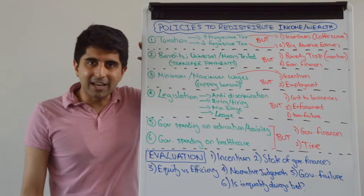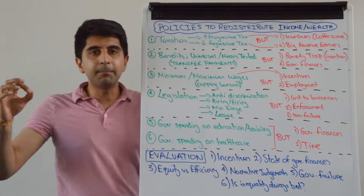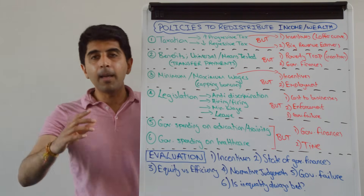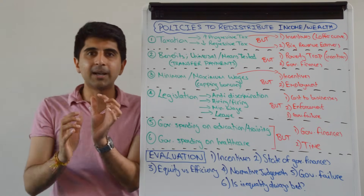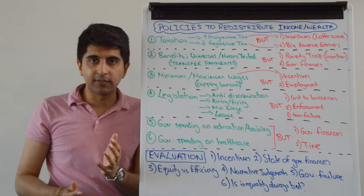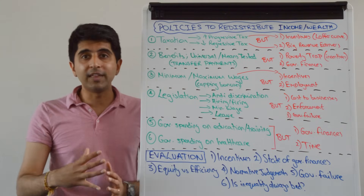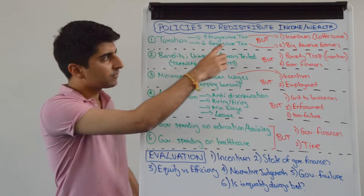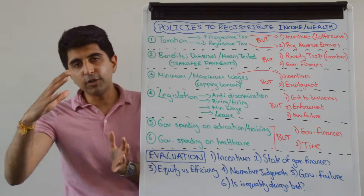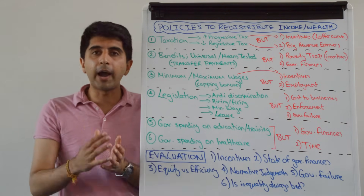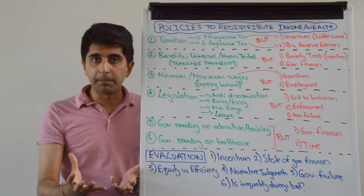Let's start by looking at taxation policies to redistribute income and wealth and to help reduce poverty. There are two options available to governments. One option is to make progressive income tax systems more progressive — either by taxing the rich more heavily, i.e. by raising tax rates on those earning in the highest income tax brackets, or by raising the income tax free allowance at the lower end. By raising the tax free allowance it's the poor that benefit the most because they're able to keep more of the income that they're earning. But by raising tax rates on the rich, the government will collect more income tax revenue from the rich, and that revenue can be redistributed to the poor either in terms of higher benefits or by spending on key areas like education and health services which will benefit the poor significantly.